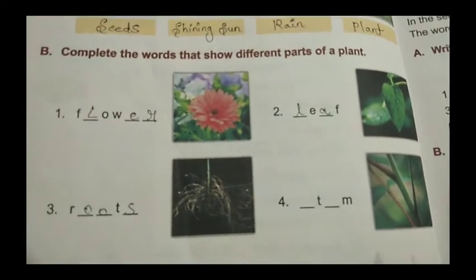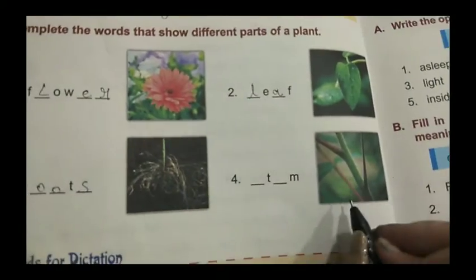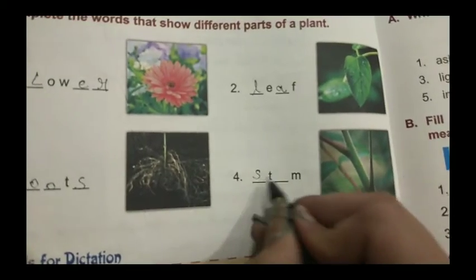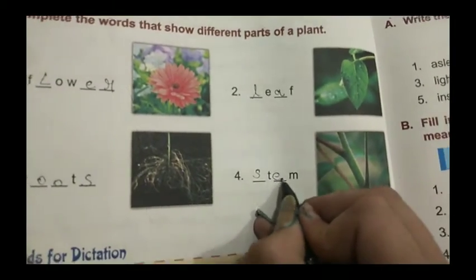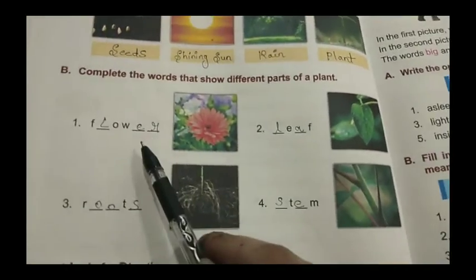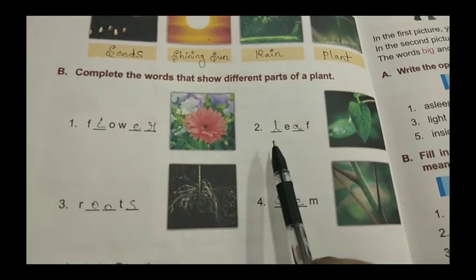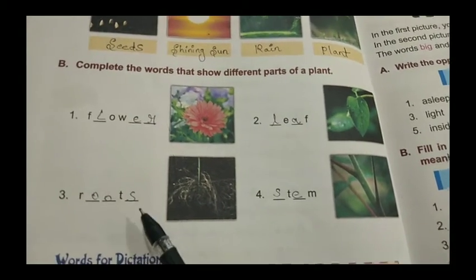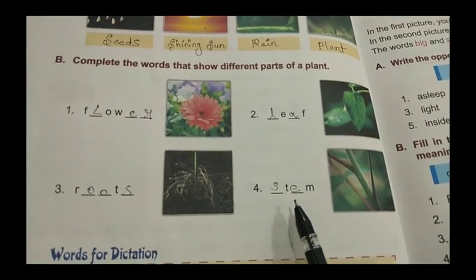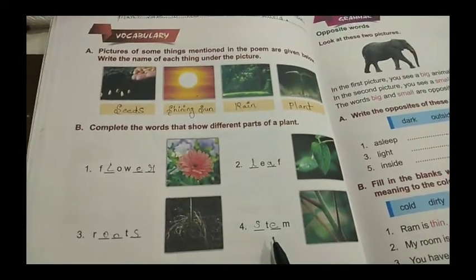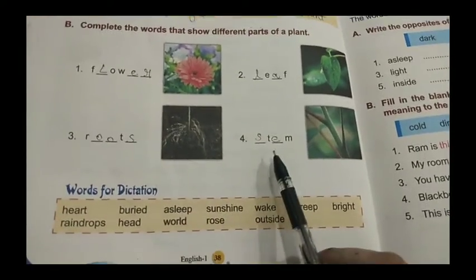Then in the fourth picture we can see stem. So here we will write S, T, E, M — stem. So the first one is flower, second one is leaf, third one is roots, and fourth one is stem. So here we have completed our vocabulary part also.